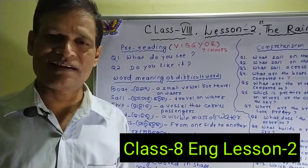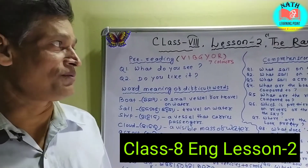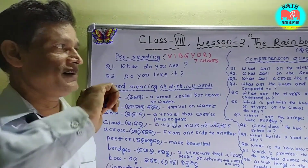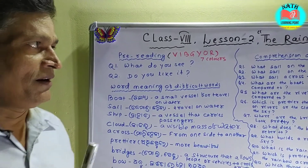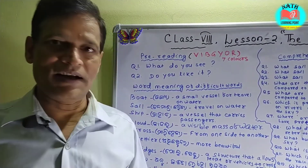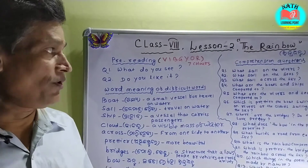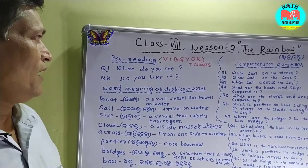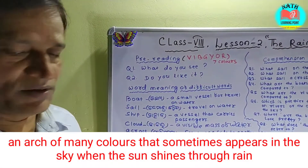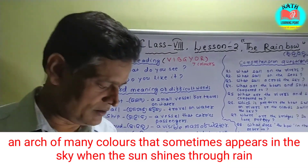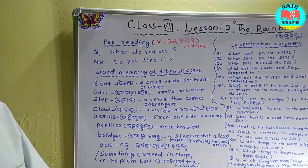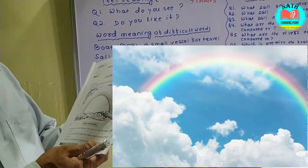Good morning, my dear students. How are you today? We read the lesson on the rainbow. First of all, we try to know what a rainbow is. I have asked some questions to you. What do you see in the picture? This is the picture of a rainbow.